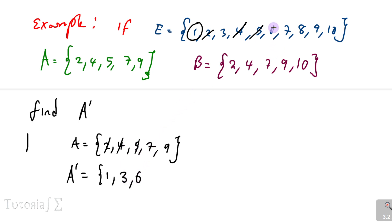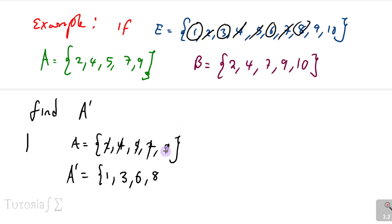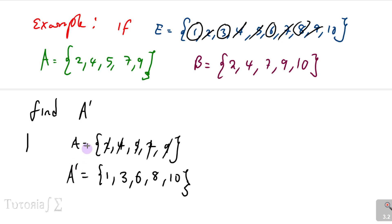We have 7 in the universal set — 7 is in A, so no. We have 8 — not in A, so write 8. We have 9 — in A, so cancel. We have 10 — not in A, so write 10. So A complement = {1, 3, 6, 8, 10}. A complement is all elements outside A.